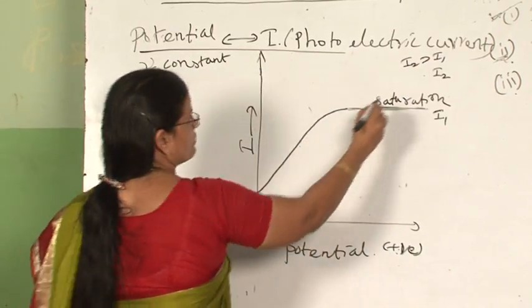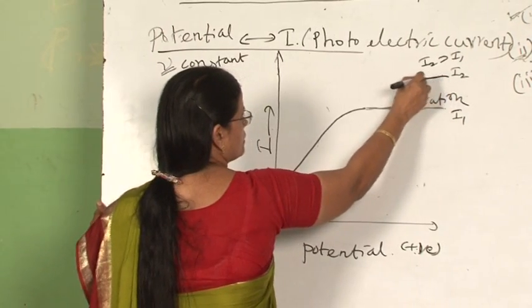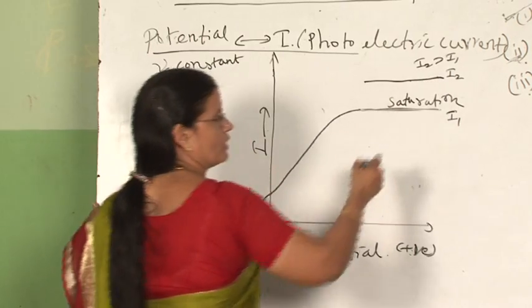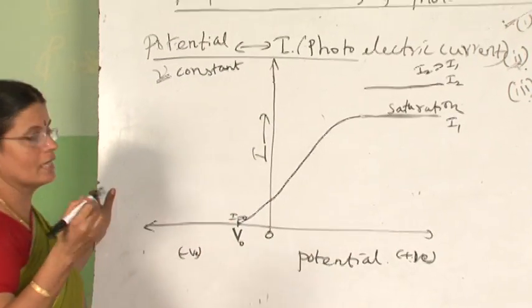We see that saturation current will be higher because we know that photoelectric current is more when intensity is increased.